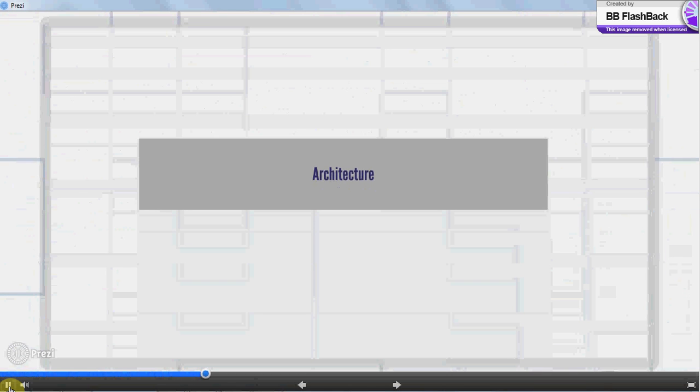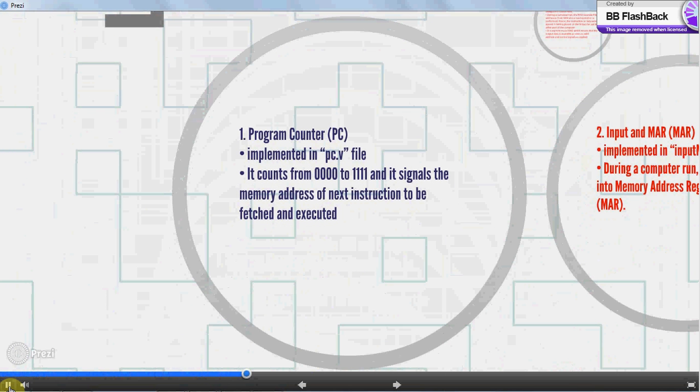Architecture to be discussed by Matthew Rendles Santiago. 1. Program Counter PC, implemented in PC.v file. It counts from 0000 to 1111 and it signals the memory address of next instruction to be fetched and executed.